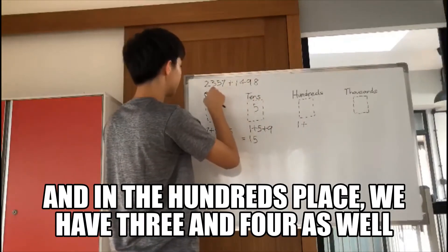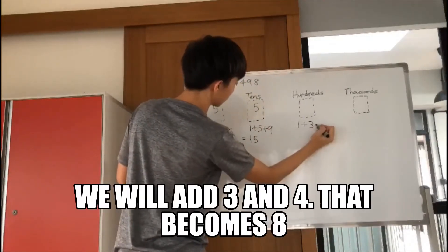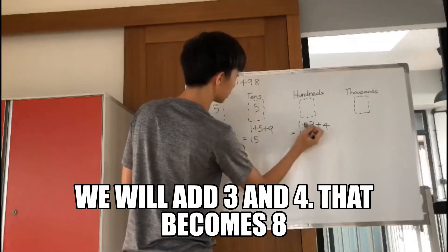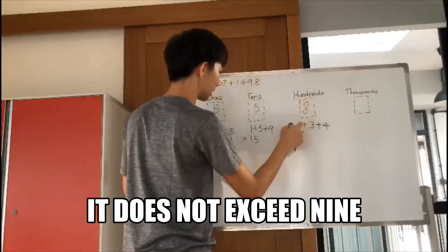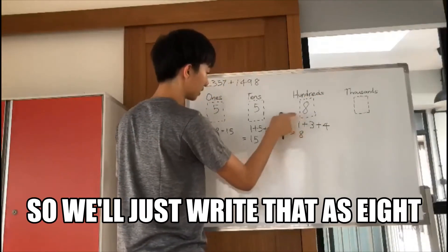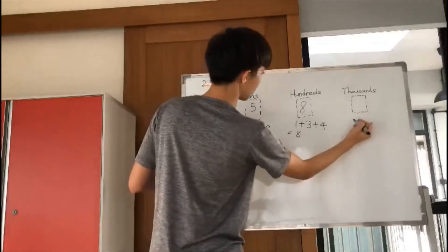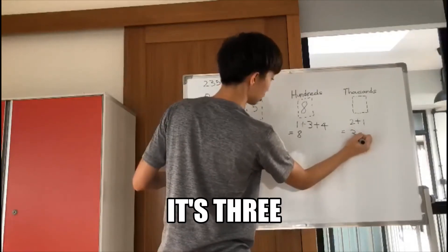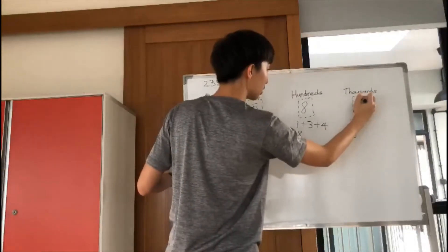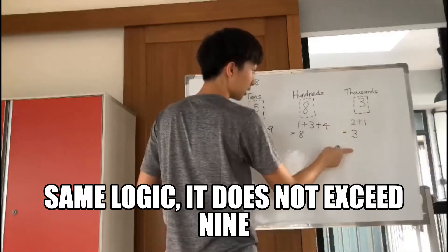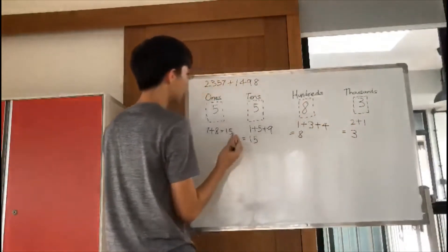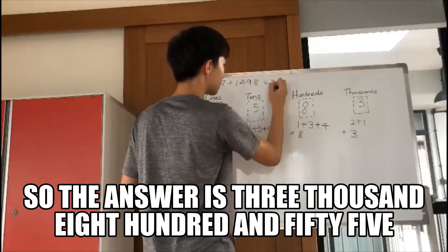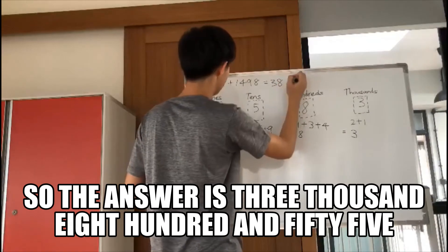In the hundreds place, we have three and four as well. We will add three and four — that becomes eight. So we have eight hundreds; it does not exceed nine, so we just write it as eight. In the thousands place, we have two and one — that's three. It does not exceed nine, so we just write the three. So the answer is three thousand eight hundred and fifty-five.